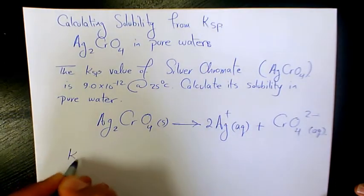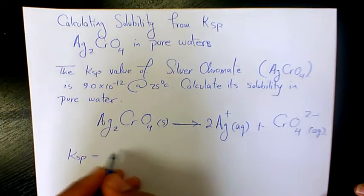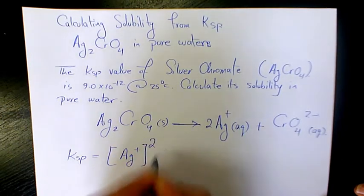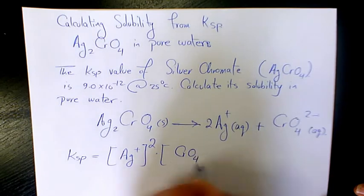So we can say Ksp, which is solubility product, is going to be the concentration of Ag to the power of 2 times concentration of chromate ion.